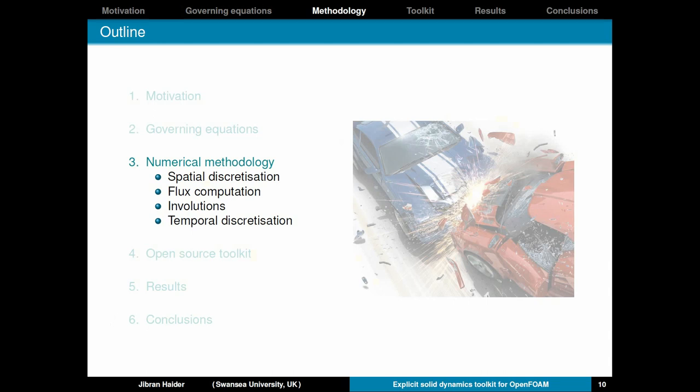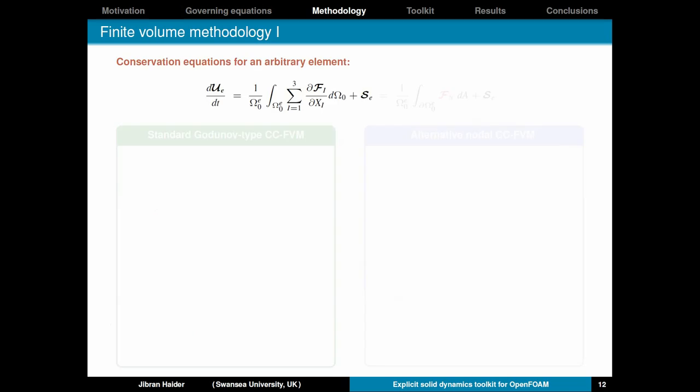Moving on to the numerical methodology and firstly we'll talk about the spatial discretization. So keeping in mind our system of hyperbolic conservation laws we apply that onto an arbitrary element or control volume. Where U_E are your unknown variables at the centroid of this element. On the right hand side you have omega_E which is the initial material volume. And you have integral of the right hand side on this volume. Now you apply the Gauss divergence theorem. You convert this volume integral into surface integral. And what you are left with are the normal fluxes which need to be determined in order to compute your unknown variable.